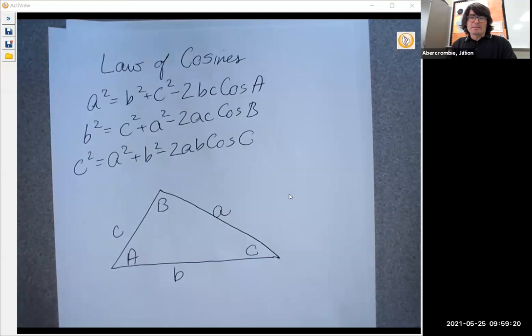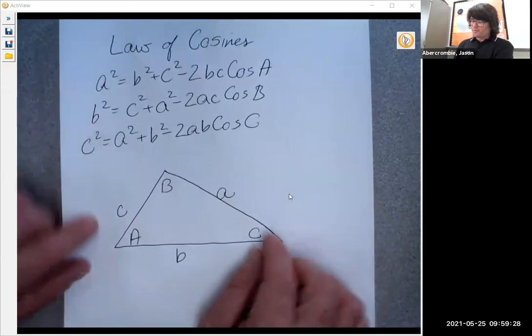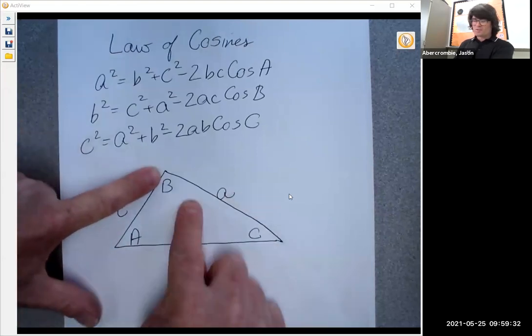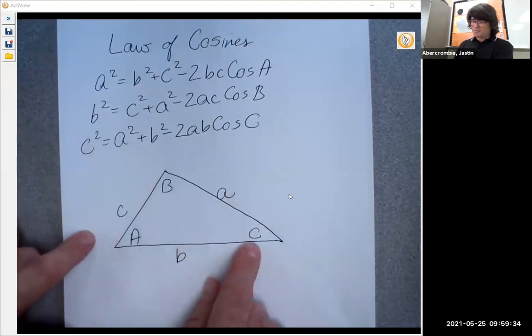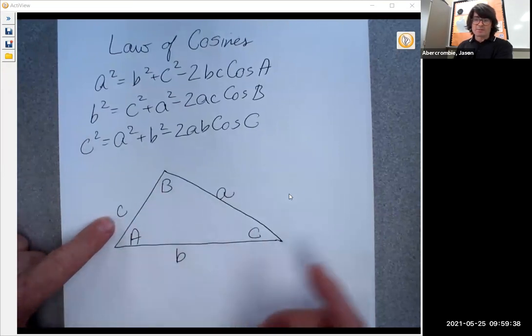Hi, everybody. In this video, we're talking about the law of cosines. I've written the law of cosines down in three different formats. They all mean exactly the same thing. If you have a triangle, you have angle A across from side A, angle B across from side B, angle C across from side C. The angles are always written in capitals, the sides are written in lowercase.